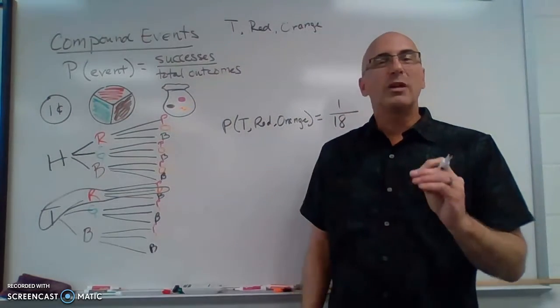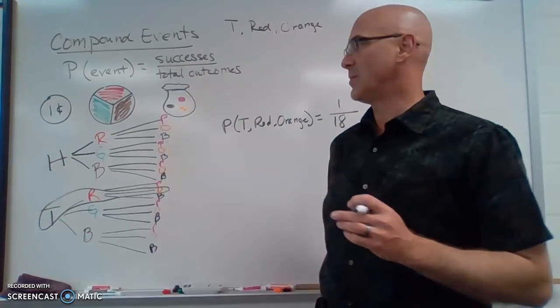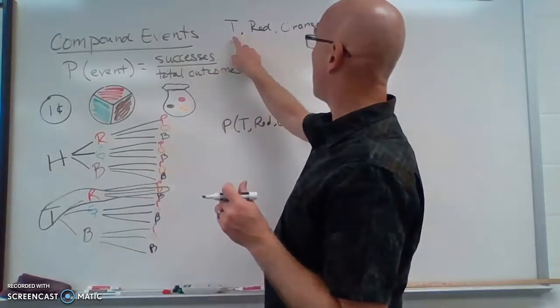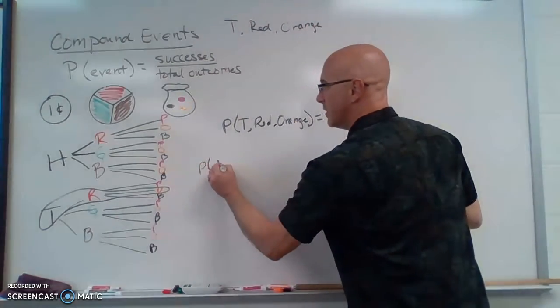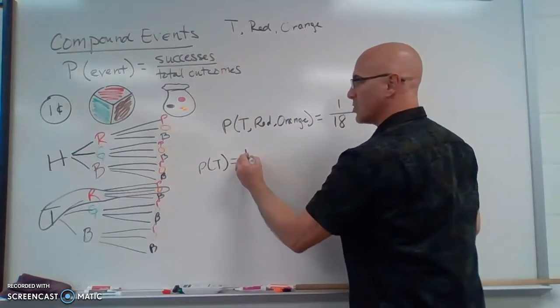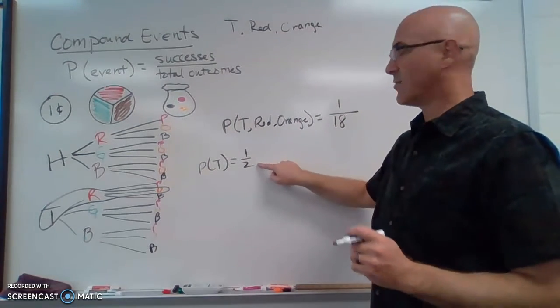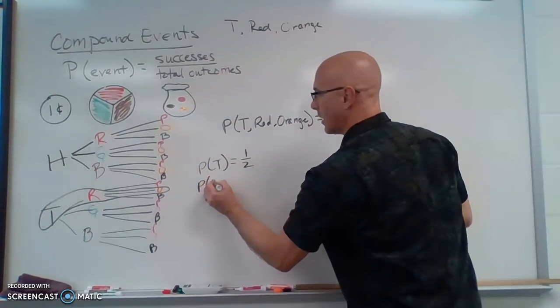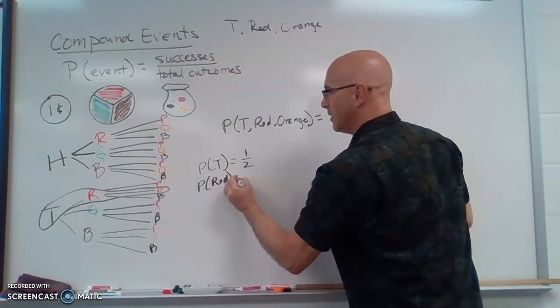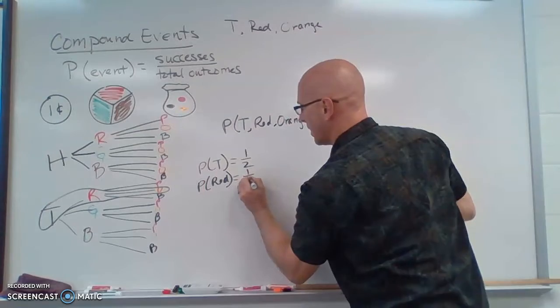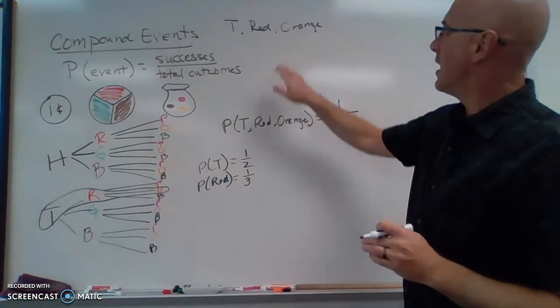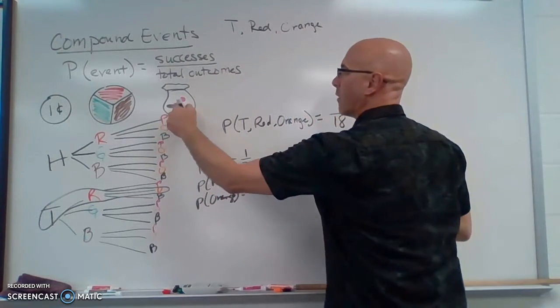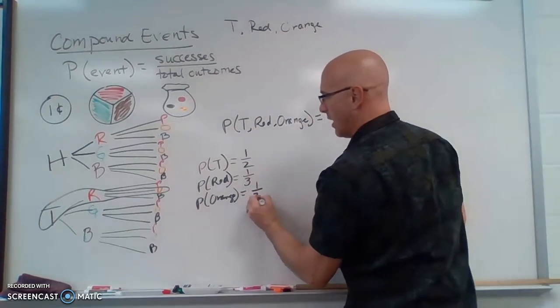So how could we do this without actually drawing this? Let's think about it. The probability of getting a head, or I'm sorry, the probability of getting a tail is one half. You have one chance of two possibilities. The probability of us getting red on the spinner, there's one chance out of three. And the probability of getting an orange marble, there are three marbles, so I get one out of three.